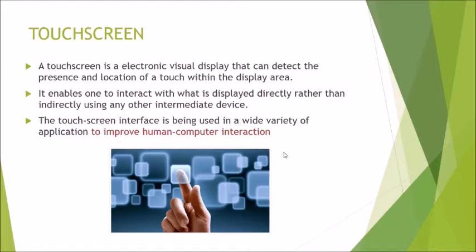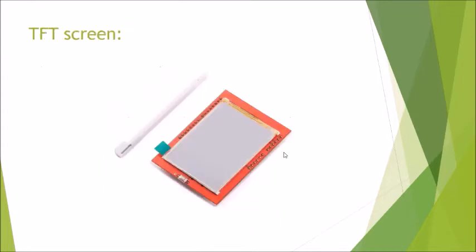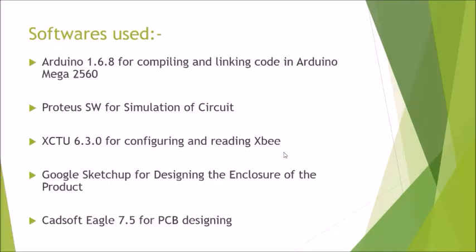The touchscreen is simply a visual display which detects touch and locates the position of touch. It gives the facility to interact directly with the display, so there is no need for other intermediate devices. This is the touchscreen display used in our gadget. The software used includes Arduino 1.6.8 for compiling and linking code on the Arduino Mega 2560, Proteus for circuit simulation, XCTU for configuring and reading the ZigBee, and CatSoft Eagle 7.5 for PCB designing.